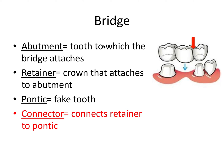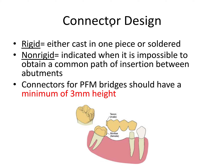Those are the five pontic designs. Now let's discuss connector designs — the connector being what connects the retainer to the pontic. For connectors, there are really only two main categories: rigid and non-rigid. The rigid connector is either cast in one piece or soldered together. As shown in this image, these connectors are rigid — you can't break them apart; they're stuck together either cast all in one piece of metal or soldered so they can't be removed from each other.